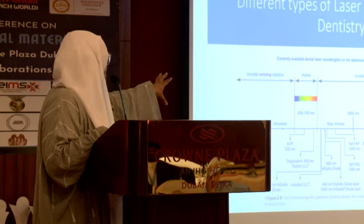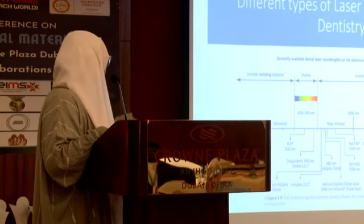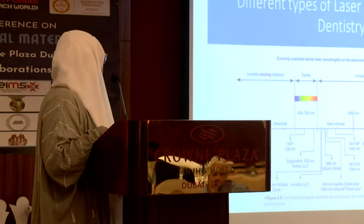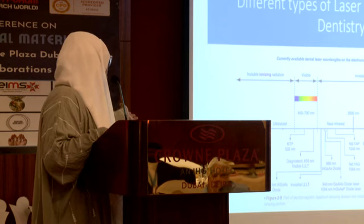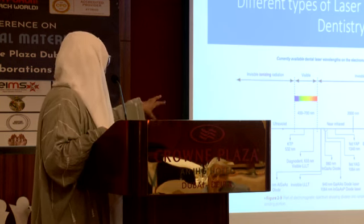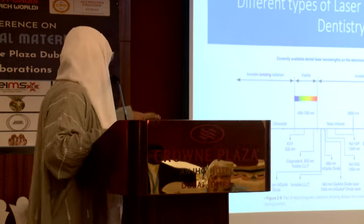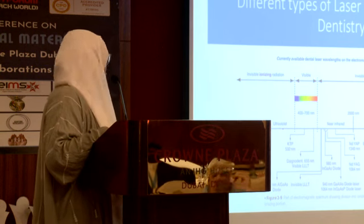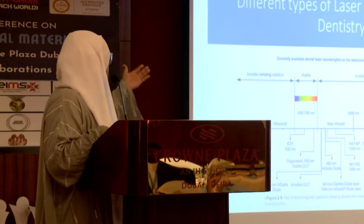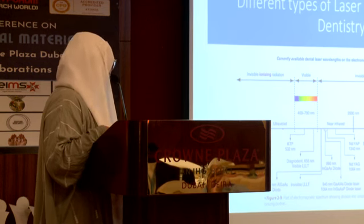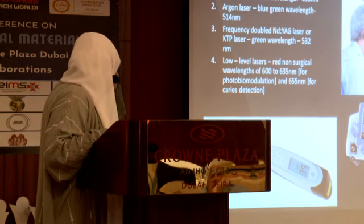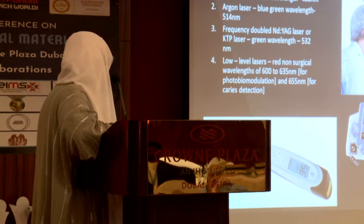From the electromagnetic spectrum, the lasers we use now include: from the visible spectrum of around 400 to 700 nanometers, we have two lasers — the KTP at 532 nanometers and the DIAGNOdent at 655 nanometers wavelength. In the invisible thermal radiation spectrum, we have a number of lasers used in dentistry, including the 980 nanometer diode lasers and the argon lasers.